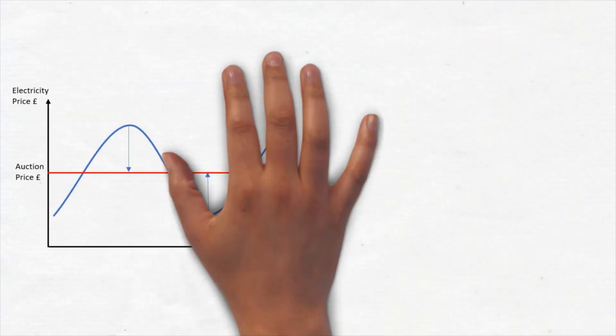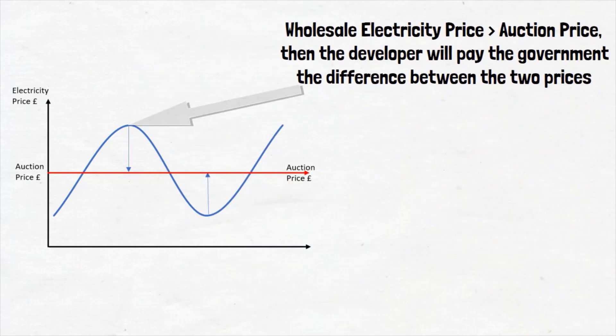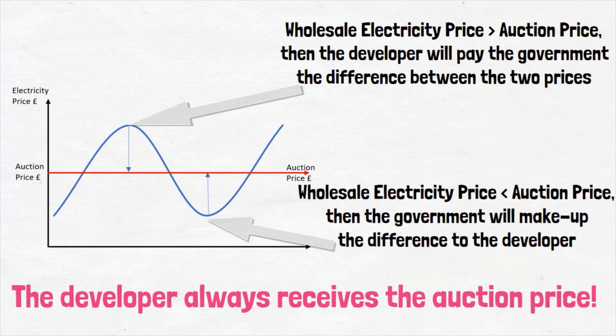If the wholesale electricity price outturns greater than the auction price, then the developer will pay the government the difference between the two prices. If the outturned wholesale price falls below the auction price, then the government will make up the difference to the developer, such that the developer always receives the auction price.